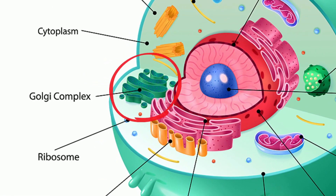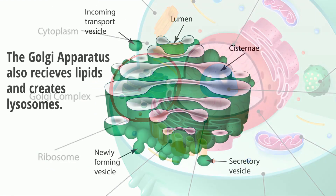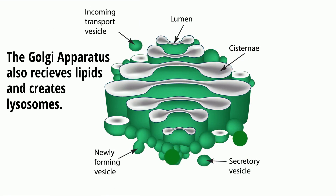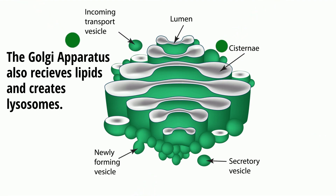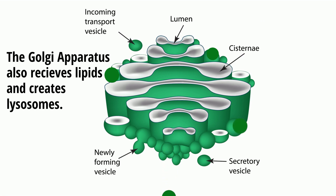The Golgi apparatus modifies and sends out proteins and lipids into the cell. It receives these proteins, modifies them, tags them, and then sends them either into the cytoplasm or maybe to the cell membrane where they are released out of the cell.